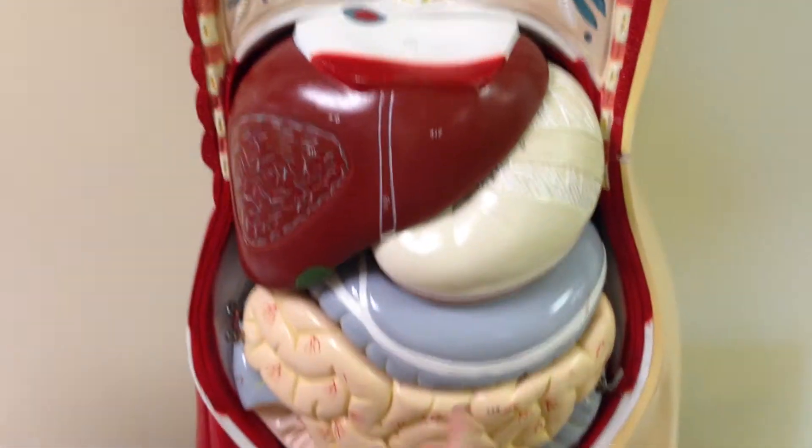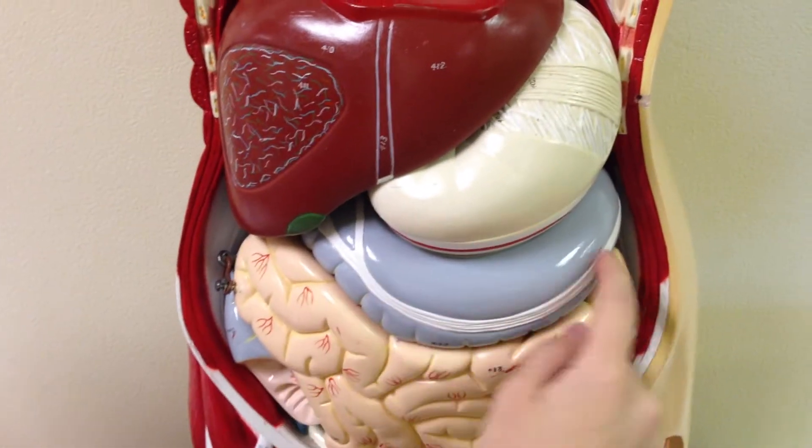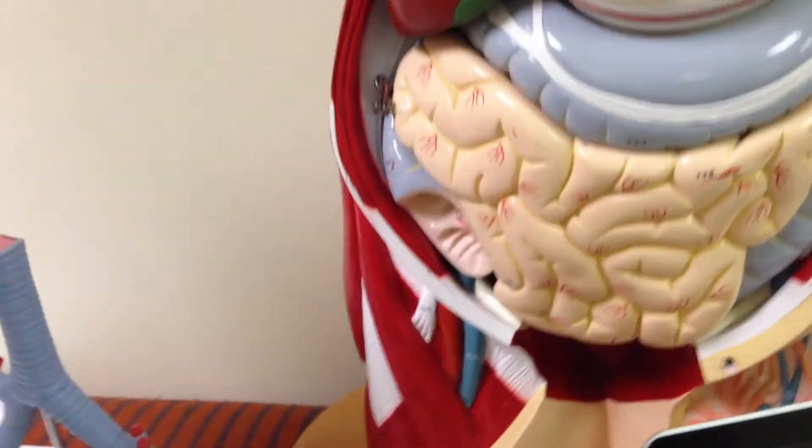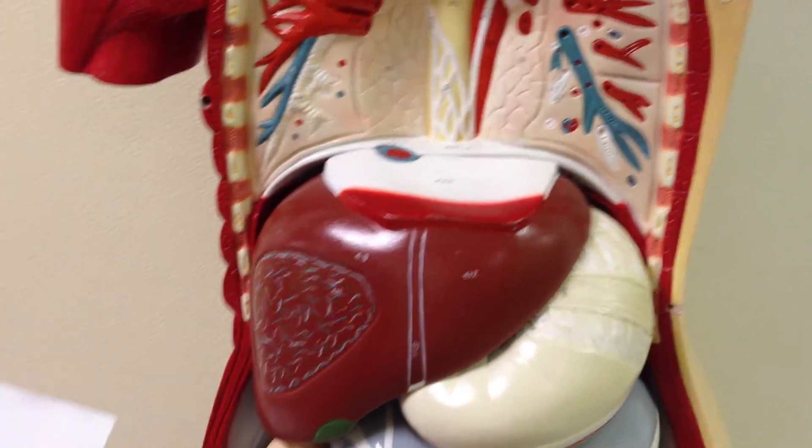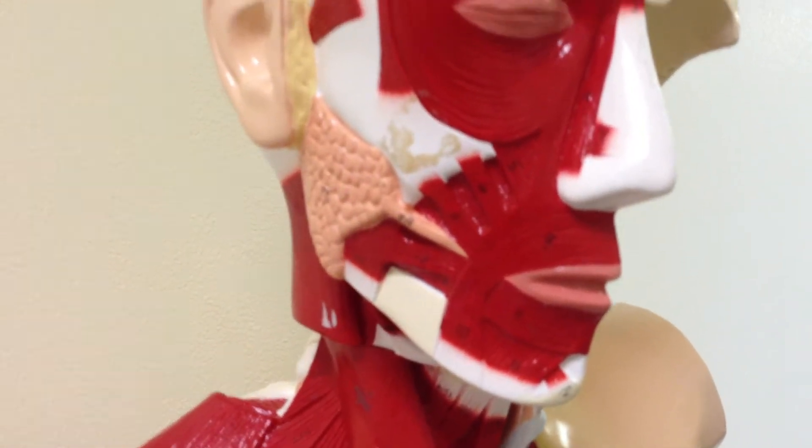And then you have the small intestines and then the large intestines. And then you have accessory digestive organs which include, they secrete products into the GI tract. Those include salivary glands which you can see here.